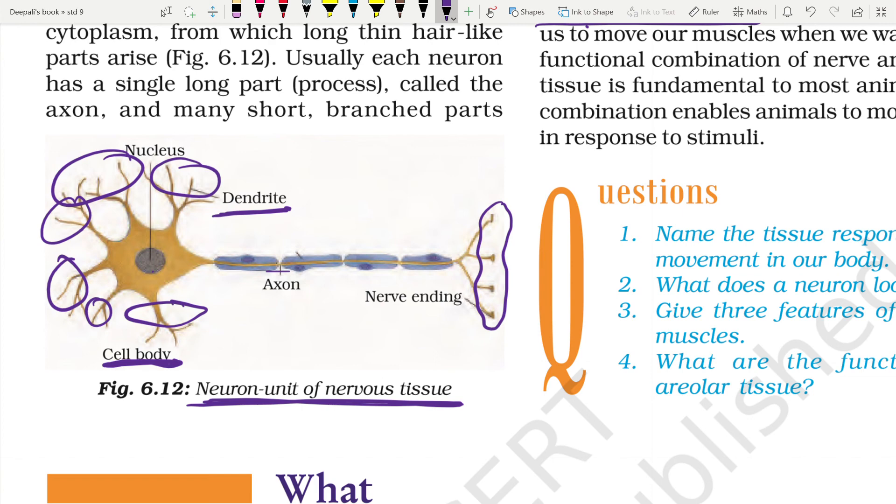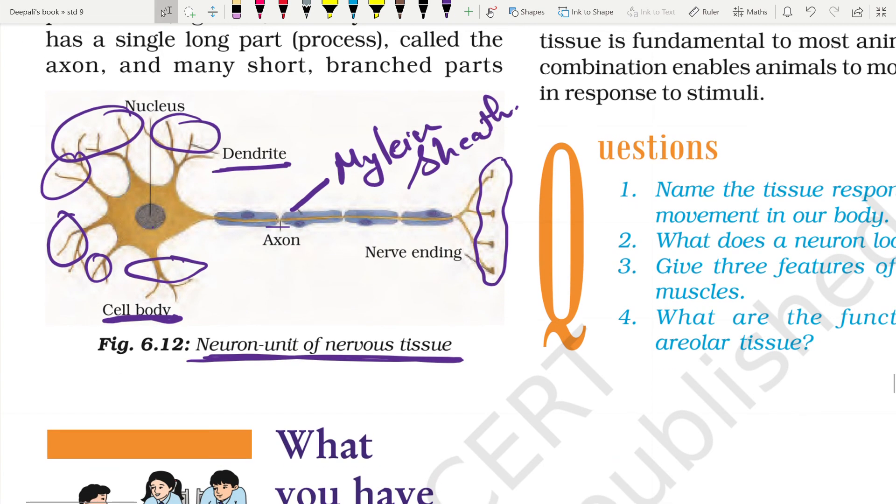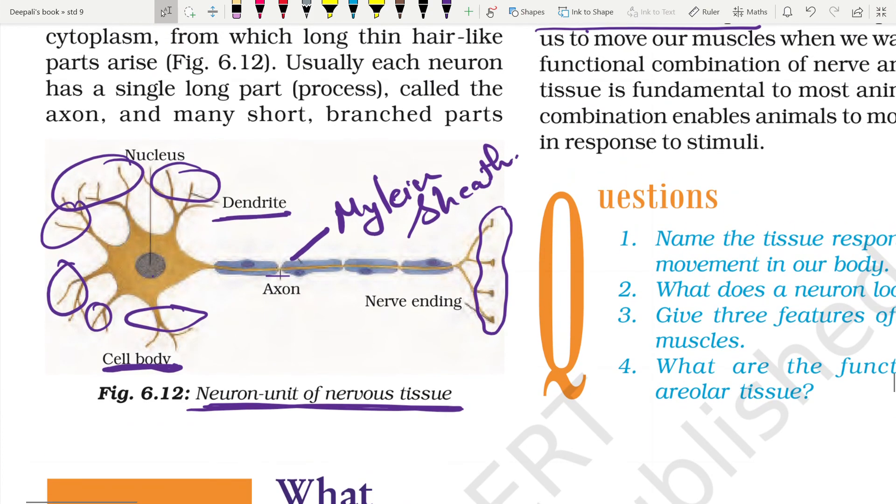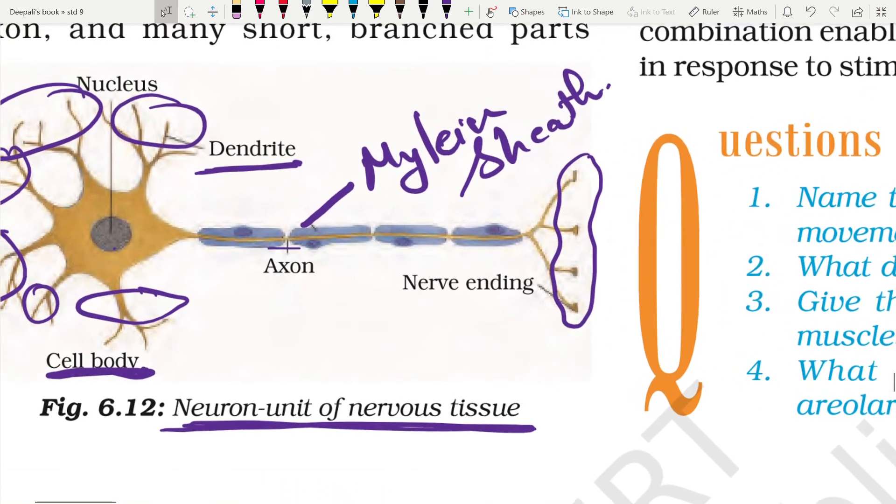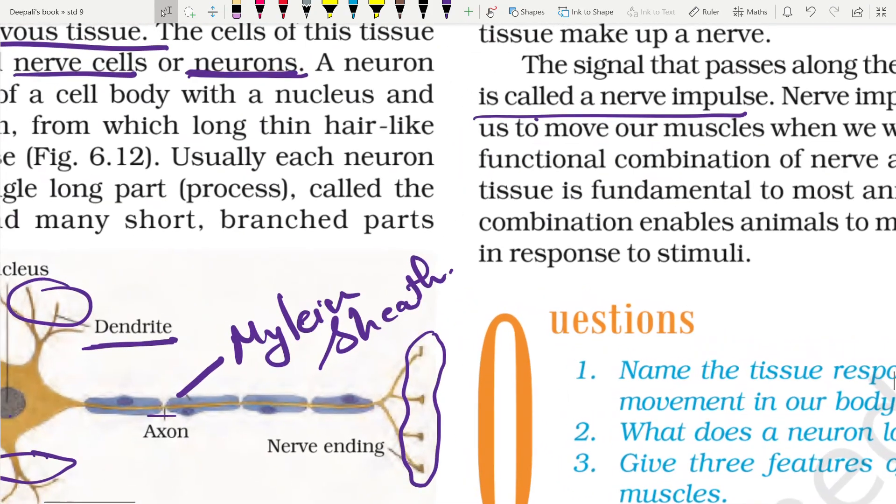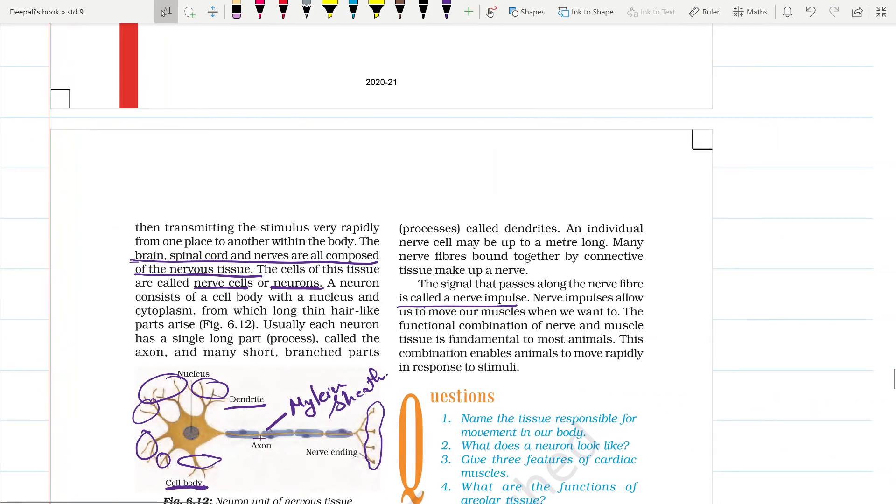The axon is surrounded by a myelin sheath which functions as an insulating material, so that the messages do not get mixed up from one part of the nerve ending to the other. This is the nerve cell or the neuron or the nervous tissue of the animal cell, which are very important for the control and coordination of any animal tissue or animal body.